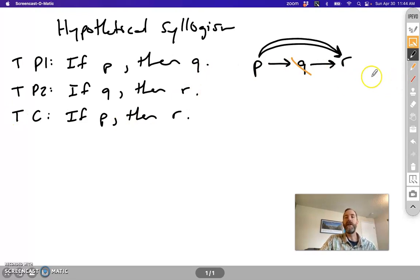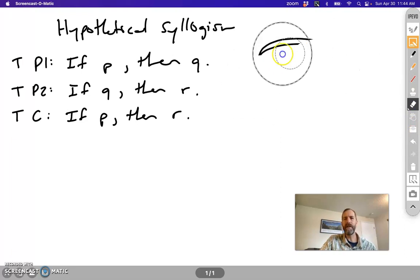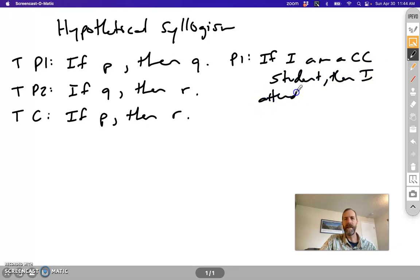So if we look at an actual argument here, we can fill anything in for P, Q, and R. So an example of this might be, if I am a Clark College student, then I attend a Washington school. We already know that that's a true claim. It has an antecedent that is sufficient for the consequent, which is necessary for it. Let's introduce another true claim.